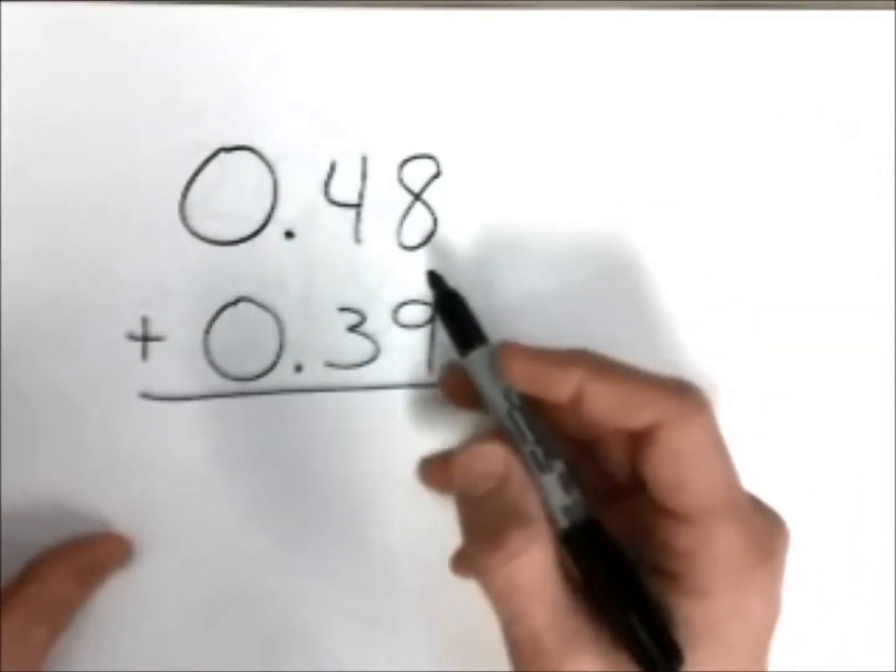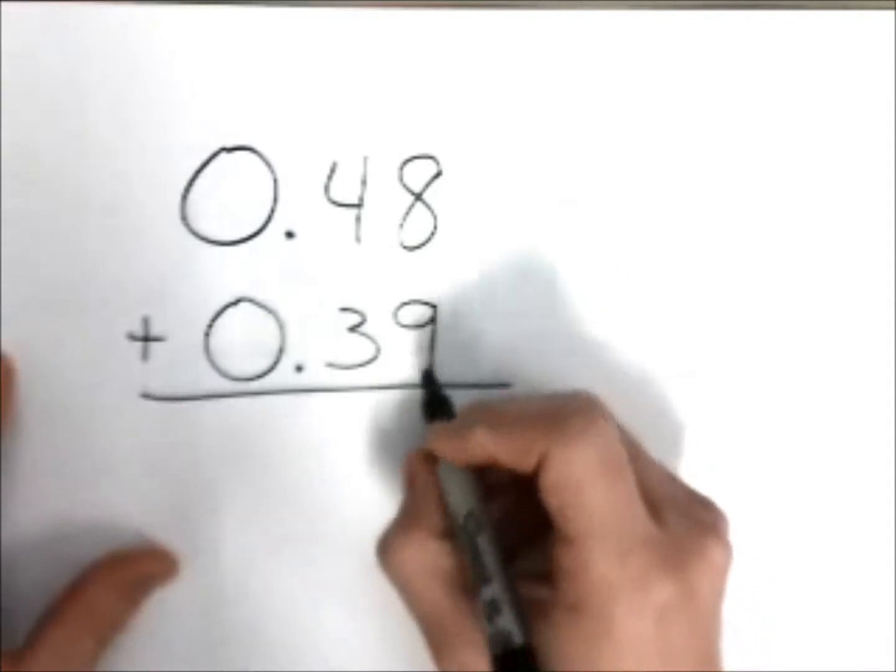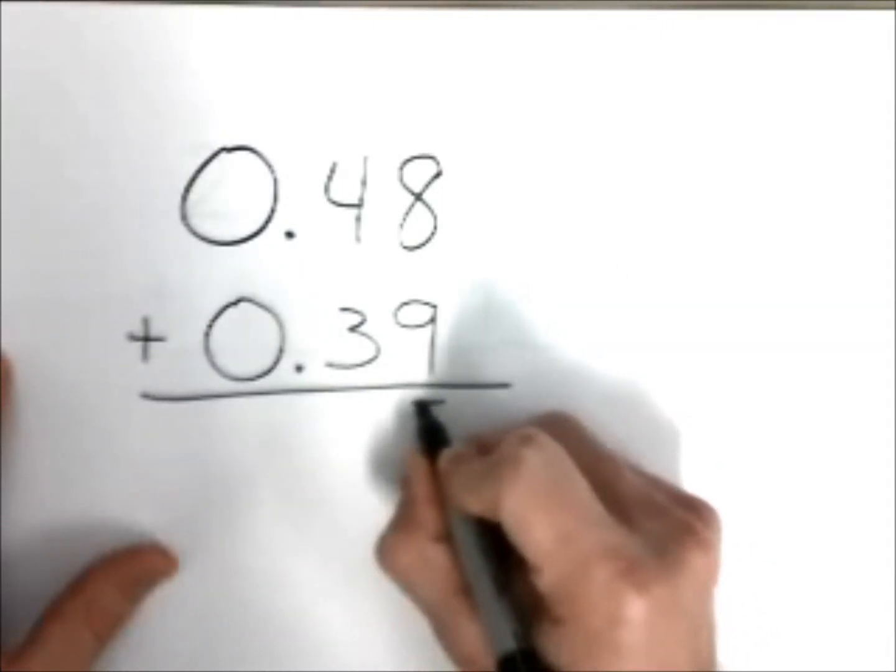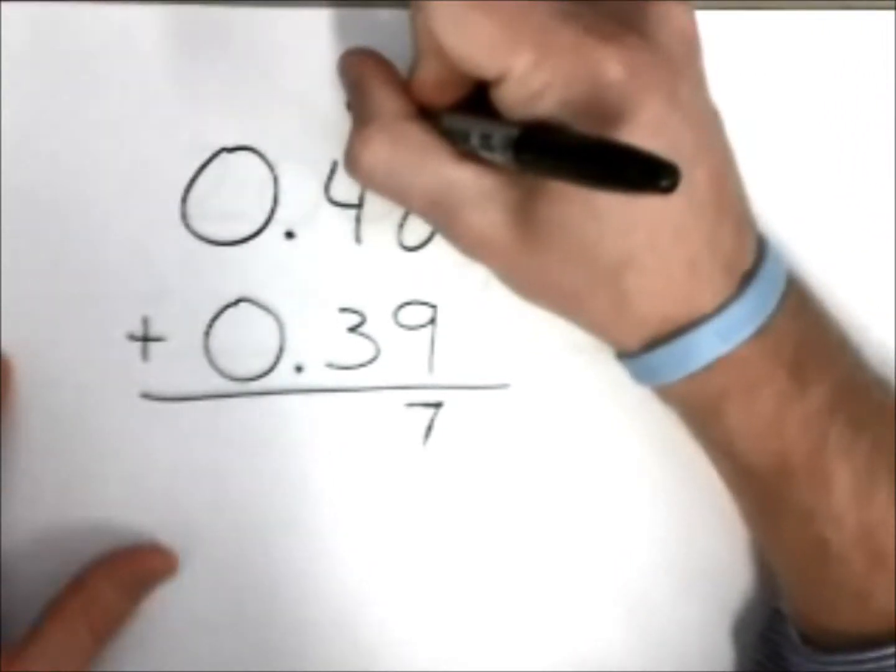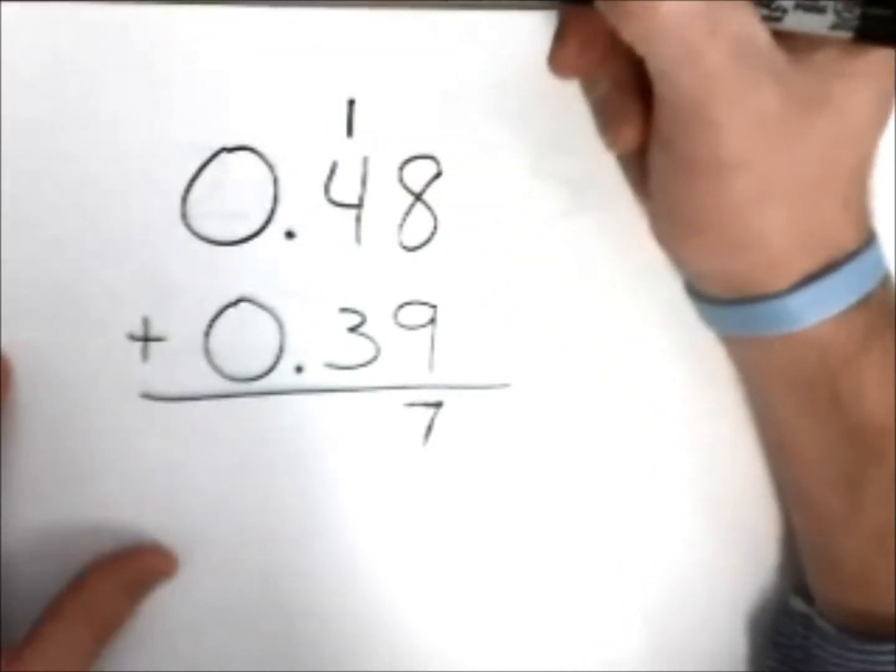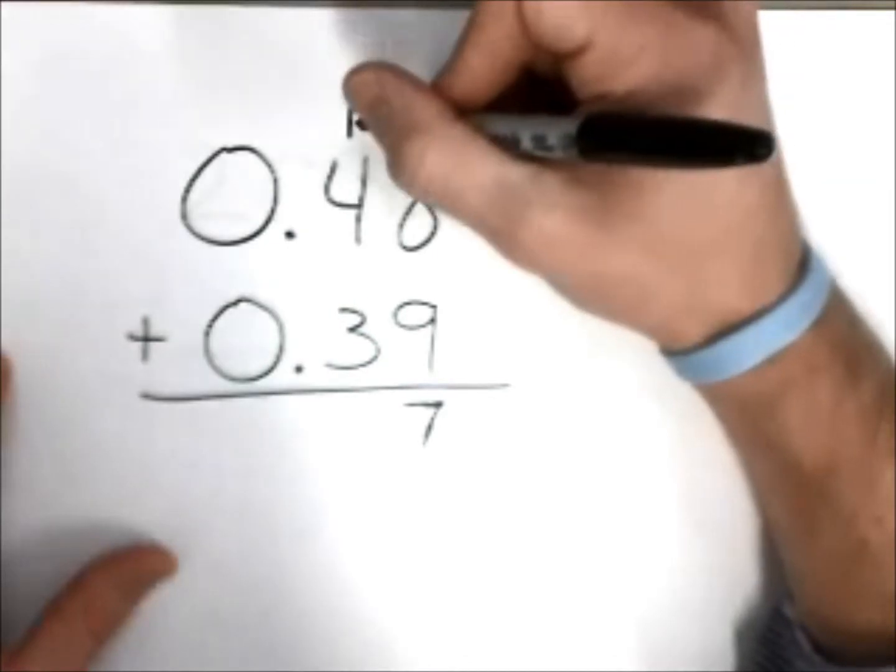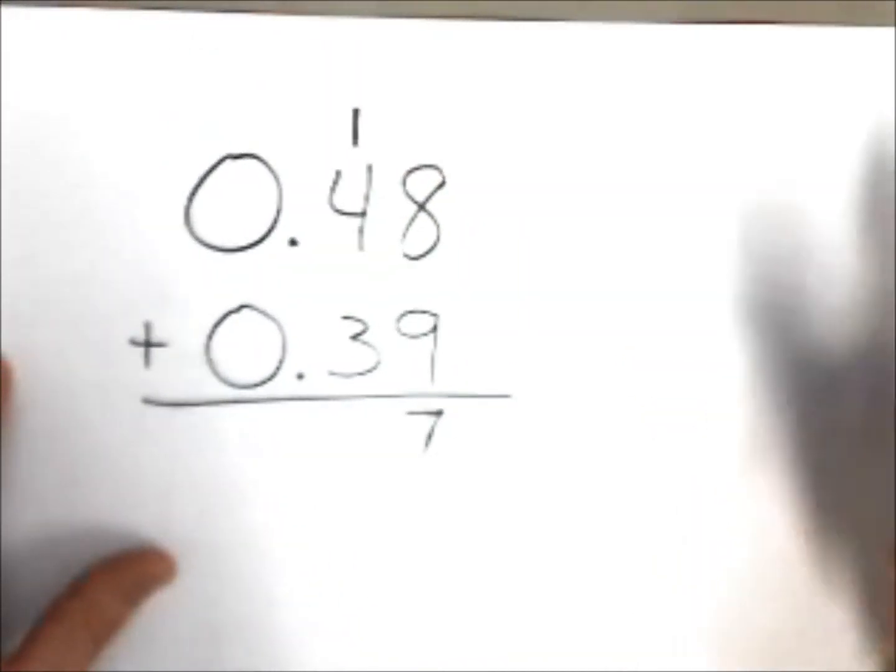So eight plus nine is going to give you 17. Now I'm going to put my seven here. In the past we called this carrying, and now with our new Math Expression series, they're going to call this grouping.